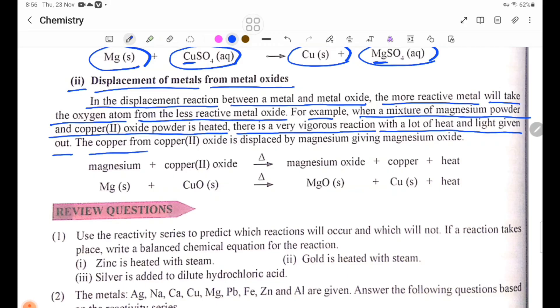The copper from copper oxide is displaced by magnesium, giving magnesium oxide. The equation is that the copper oxide is used by magnesium oxide. Copper oxide plus magnesium gives magnesium oxide and then copper.